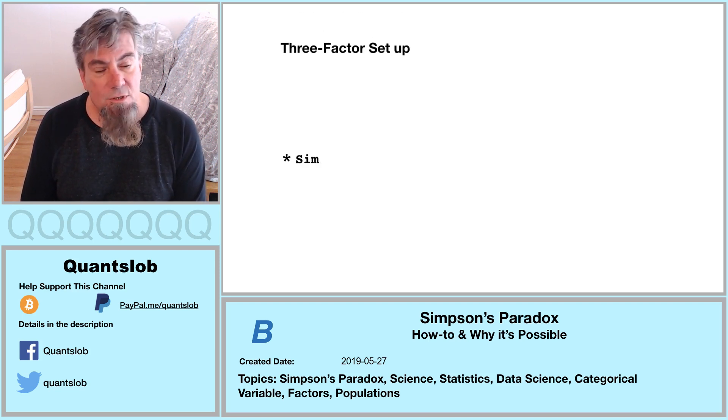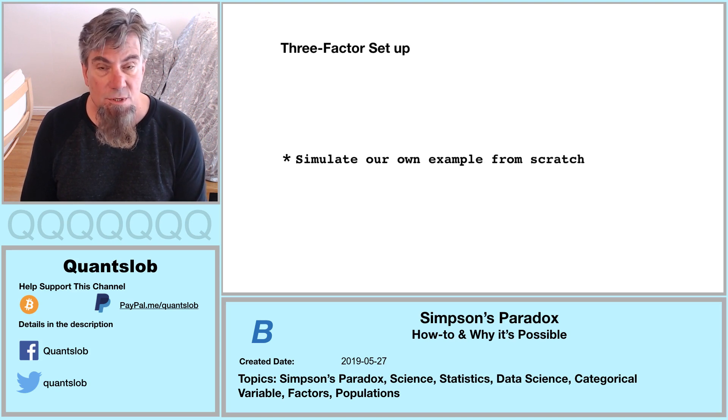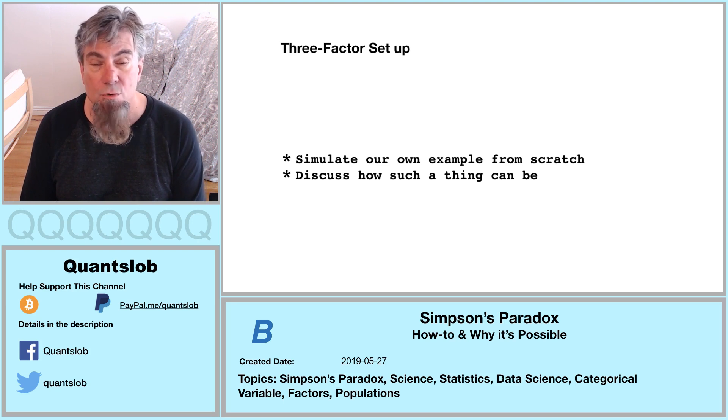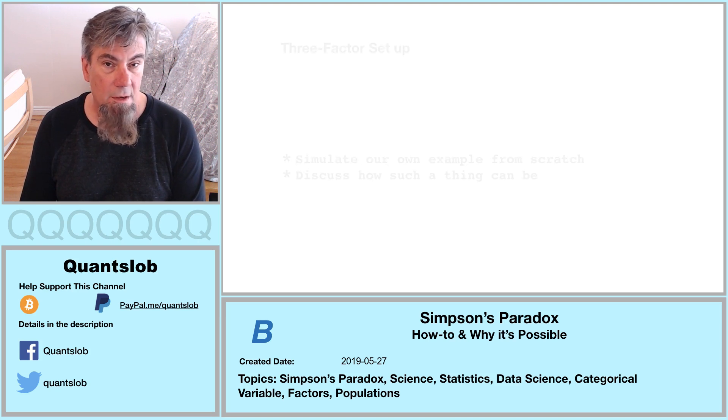Most introductory examples we'll see illustrating Simpson's paradox involve a three-factor setup. What we're going to do here in this edition is demonstrate how to fashion an example of a three-factor paradox. In other words, we're going to simulate results to illustrate Simpson's paradox. Then we're going to discuss how such an unusual thing can possibly be.